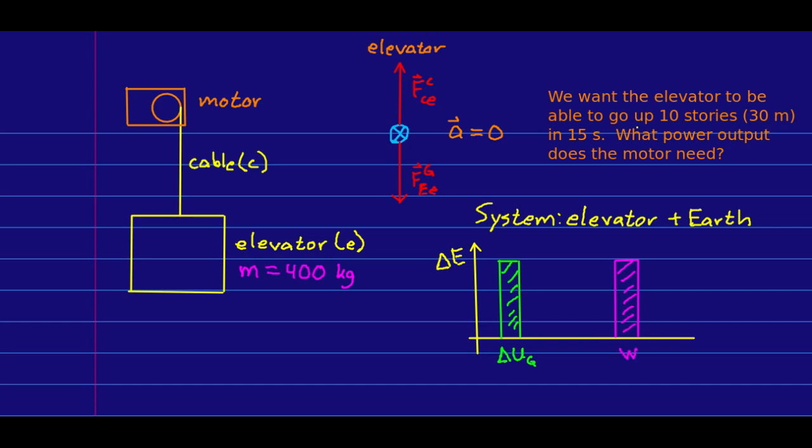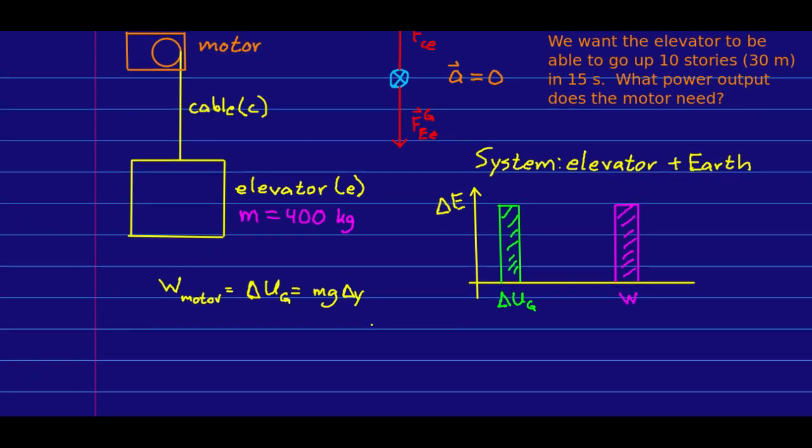And so we see that in raising the elevator by 30 stories, we will have that the work done by the motor equals the change in the gravitational energy of the elevator, which is just going to be mg delta y. And we can get straight to what we actually want, which is the power of the motor, then, if we simply say it will be the work of the motor divided by delta t. And so that's just mg delta y over delta t.